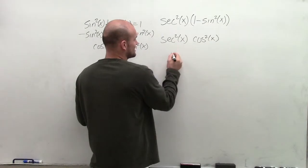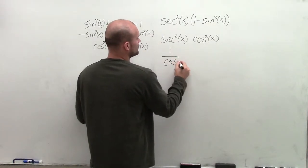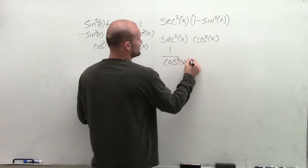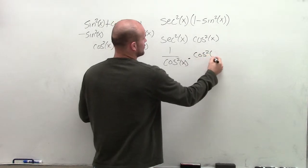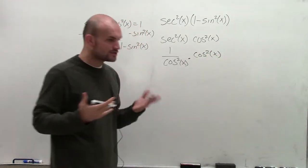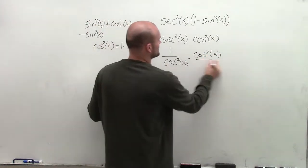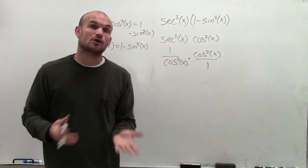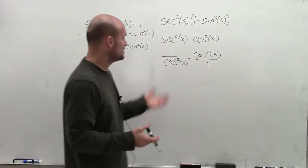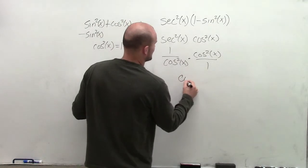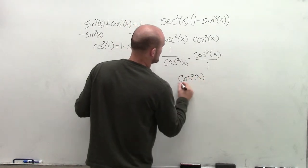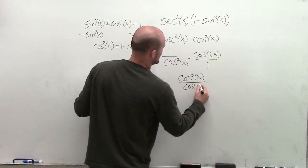So therefore, the secant squared of x, I can rewrite as 1 over the cosine squared of x times the cosine squared of x. So now what I'm going to do is I'm just going to multiply these across. And make sure I remember that the cosine squared of x is in the numerator.